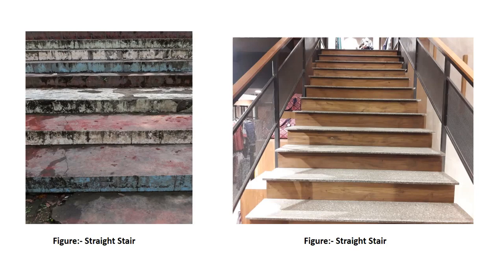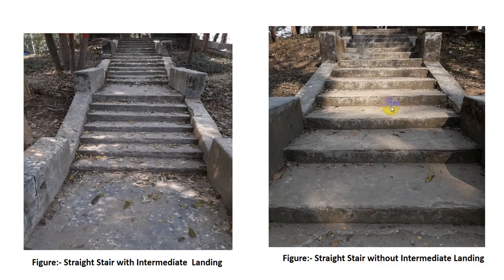If we see the figure here, this is one straight staircase. This one is made of RCC and this one is timber. Also one is accommodated with a stem. Here is another straight staircase with intermediate landing — you can see they have intermediate landing. And here is a straight staircase without intermediate landing, so they have no intermediate landing.